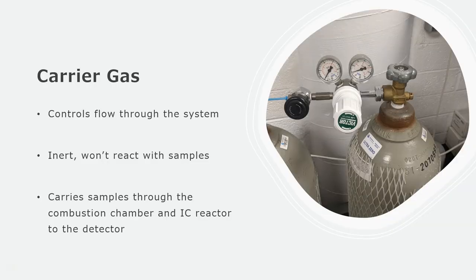The first thing that we'll talk about is the carrier gas. This is normally an inert gas used to carry the samples and push flow through the system. It carries our samples through the combustion chamber and the IC reactor into the detector. This picture on the right is what a typical carrier gas inlet looks like. Keep in mind you're going to need compressed gas cylinder training in order to operate one of these.